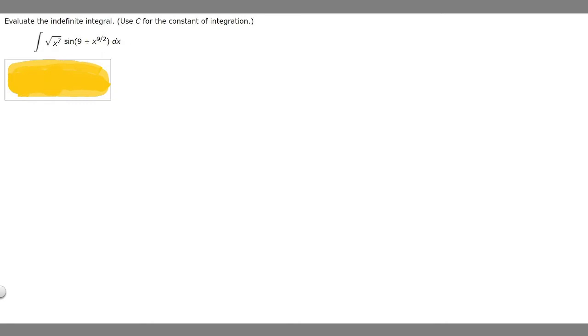So the first thing that we have to do, since we're using u-substitution, is decide what we're going to choose to be u. In this case, it looks like if we choose what's on the inside of sine, 9 plus x to the 9 over 2, that's what we're going to choose to be u. So u is going to be equal to 9 plus x to the 9 over 2.